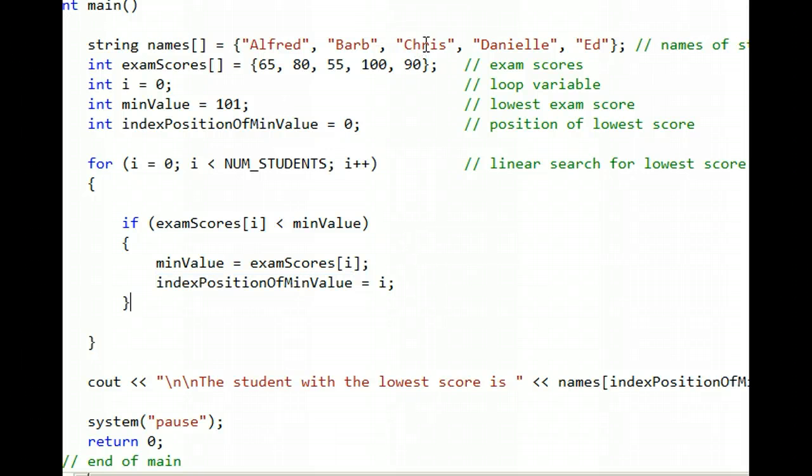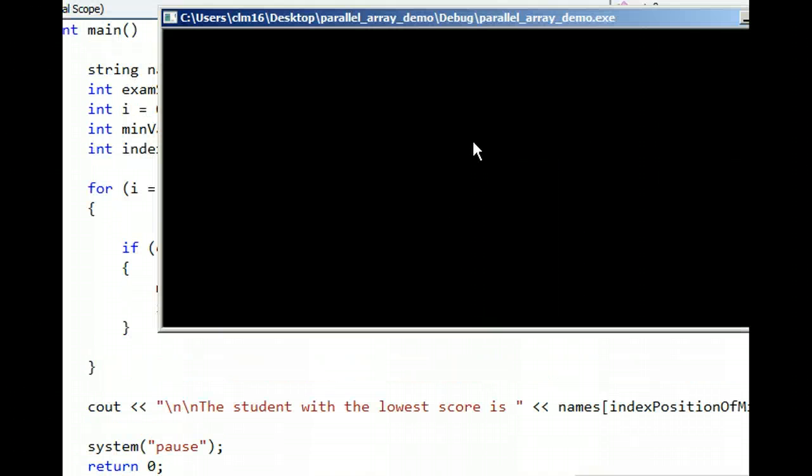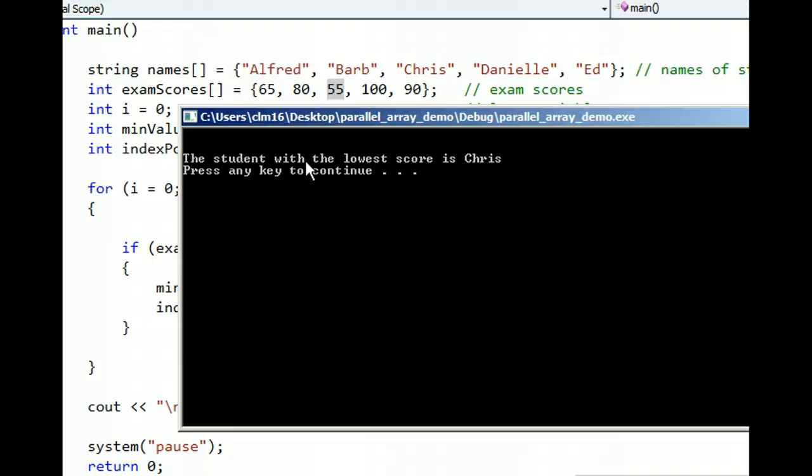Let's run the program to make sure that Chris does print out since he has the grade of 55. Wow, look how fast the computer did that. It scanned that list, and it found the 55, and it knew it was in position 2, and therefore it retrieved the name Chris and printed it out.